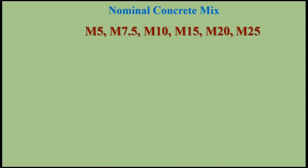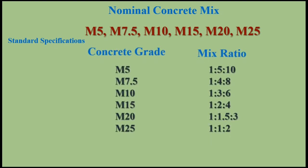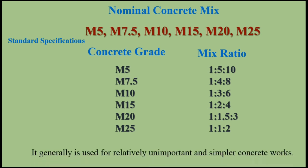In the Nominal Mix, all the ingredients and their proportions are prescribed in the standard specifications. These proportions are specified as the ratio of cement to aggregates for certain strength achievement. Nominal concrete mix may be used for grades M5, M7.5, M10, M15, M20, and M25. It is generally used for relatively unimportant and simpler concrete works.